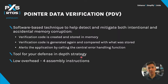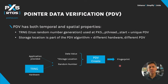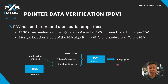To create the verification fingerprint, the PDV algorithm takes the data value, the storage location, and a random number — incorporating both spatial and temporal properties.